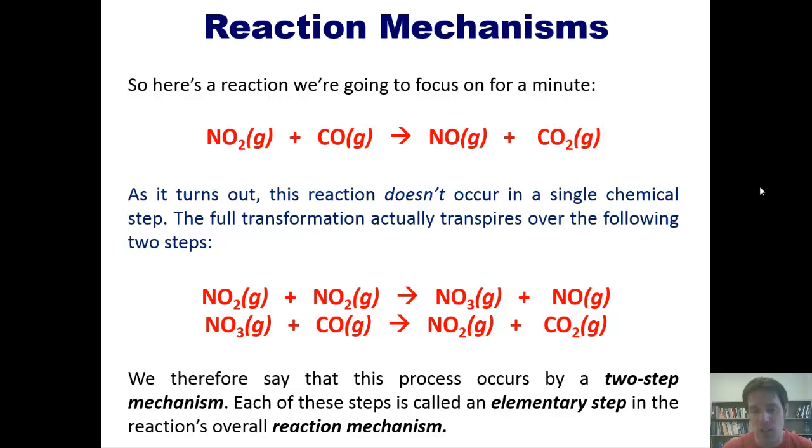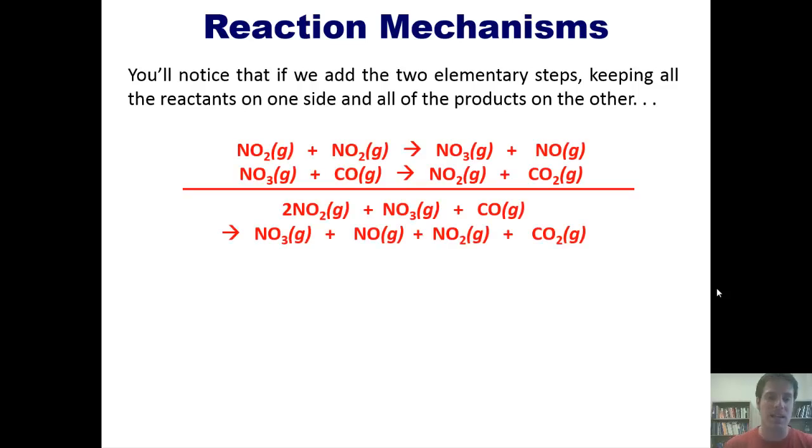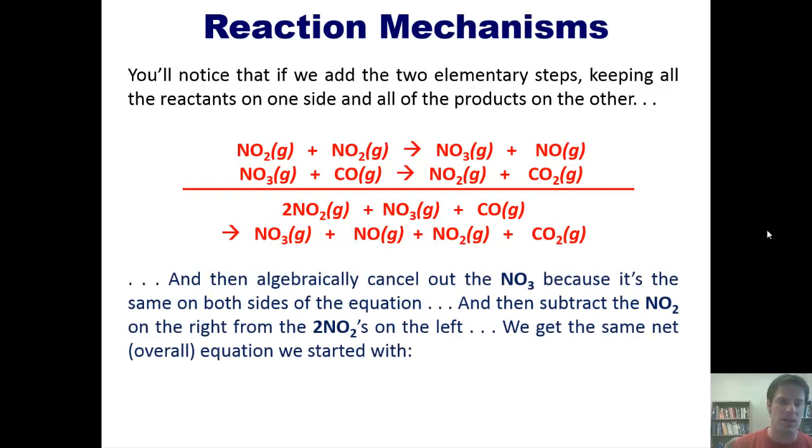Each of these steps is called one elementary step in the reaction's overall reaction mechanism. You'll notice that if we add the two elementary steps that I just showed you together and we keep everything that's on their reactant sides on the reactant side of an overall reaction and everything that's on the product sides of both of those reactions together on a grand product side, we end up getting this overall reaction shown right here. Now, you're welcome to pause the video right here and make sure that that all makes sense to you. Now, at this point, you should notice that we can algebraically cancel out NO3 from both sides of the equation. The reason is because we have an NO3 right here on the right side and an NO3 on the left side. So we can just cancel them out like this. We can then subtract the NO2 on the right side of the equation. You see that one right here? We can subtract it from both sides. So we take away an NO2 on the right side and take away an NO2 from these two NO2s on the left side. And when we're done with all of that, we end up with a net or overall equation that looks like this.